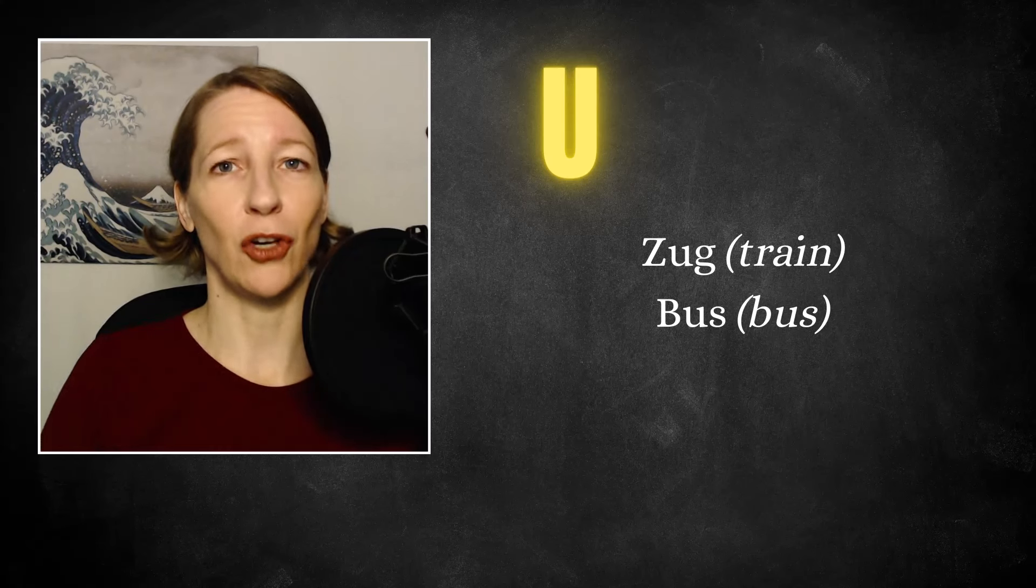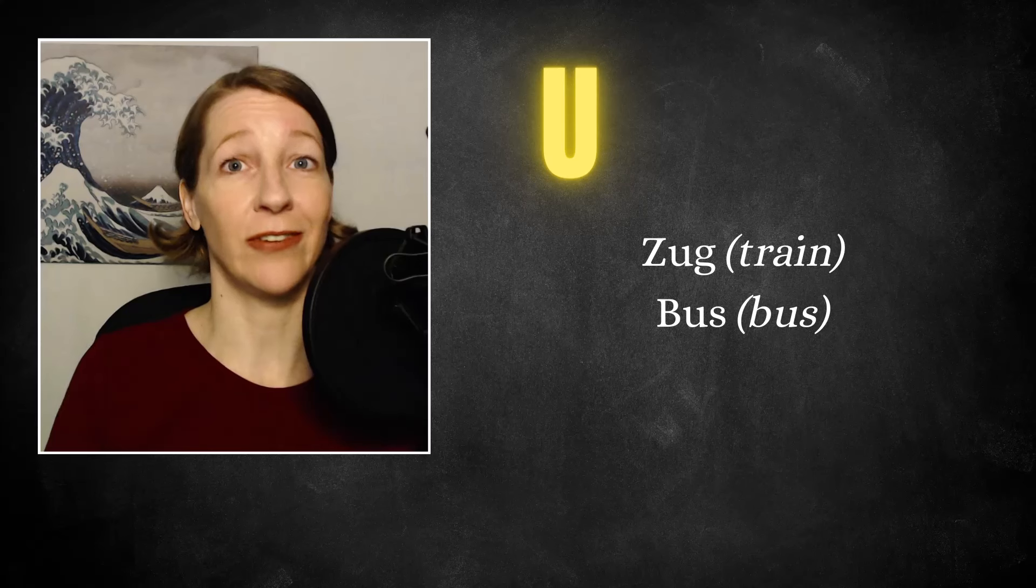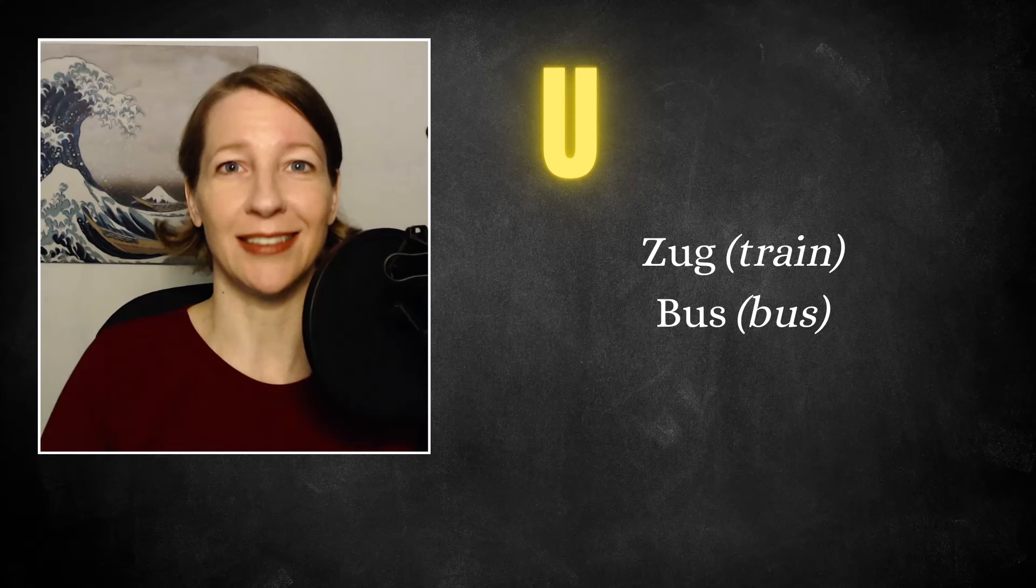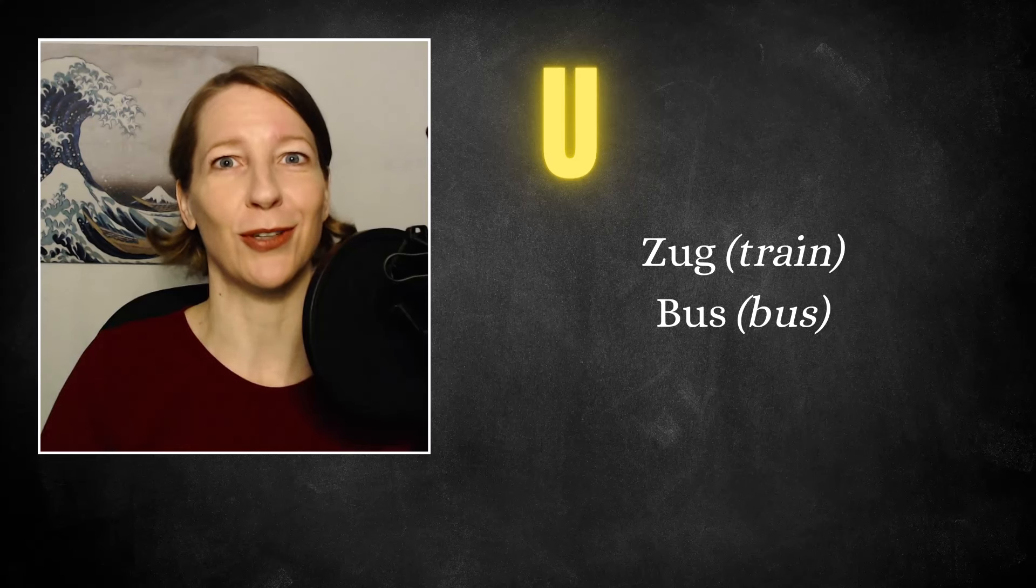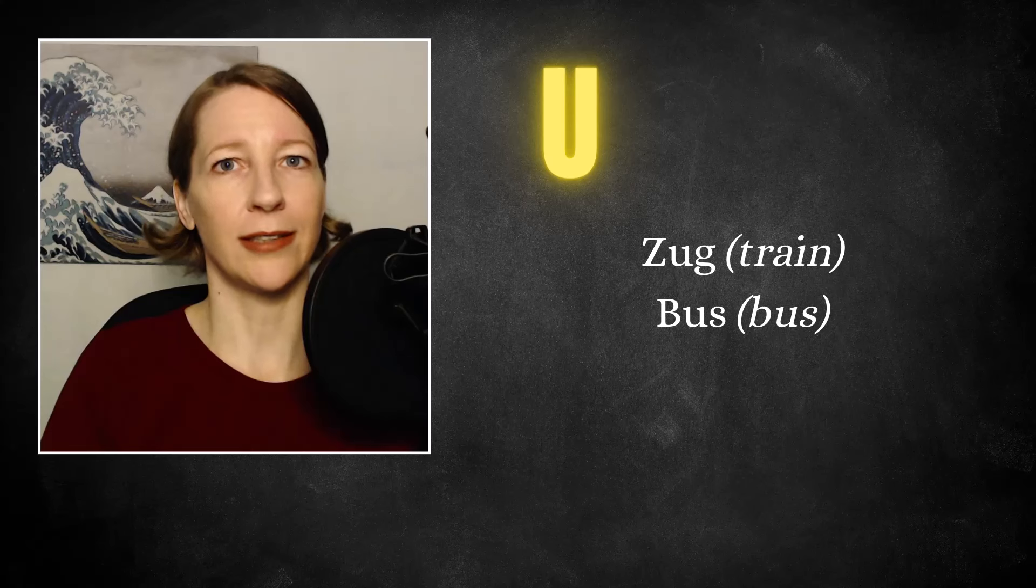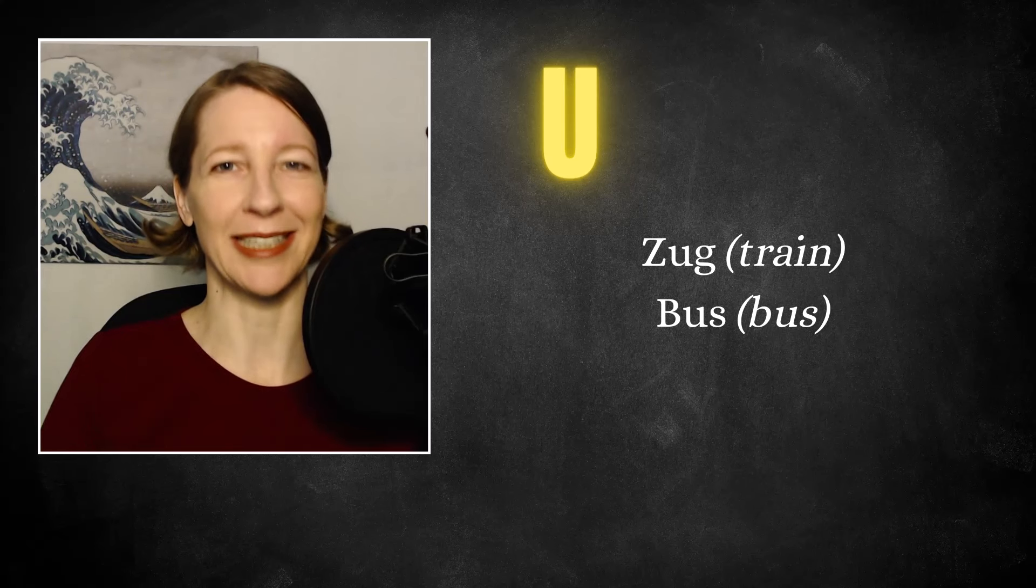Here as well, we have a long form and a short form. Zug, that's the long U. Usually this one we use when we have a consonant and then a vowel following the U. But you see here in the word Zug, we still use the long form. Whereas in Bus, we pretty much have the same situation. We use the short form. But the tendency is, you have a vowel, then the consonant and another vowel, then it's usually long. And in the other situations, it's usually short, with some exceptions.